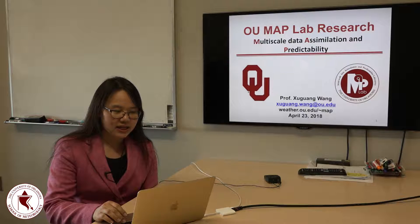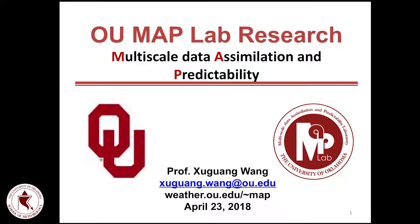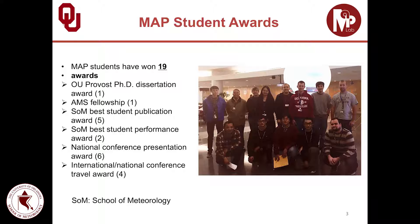I'm currently directing a research lab at University of Oklahoma performing research on data assimilation and predictability for a variety of atmospheric phenomena and scales. We call our lab MAP — M-A-P — standing for Multi-scale data Assimilation and Predictability. The MAP lab right now has 14 members: one research scientist, six postdocs, and six graduate students. So far I have advised 12 postdocs, 11 PhD students, eight master's students at OU, and also mentored three international students. Our students have won 19 awards, including the most prestigious OU Provost PhD Dissertation Award for the entire science and engineering category, AMS fellowship, best student publication award, best student performance award, national conference presentation awards, and international conference travel awards.